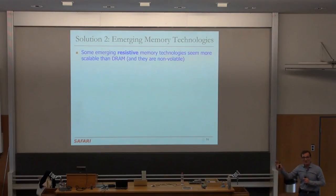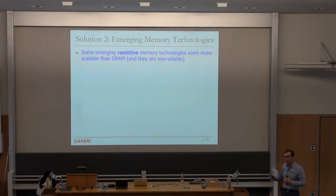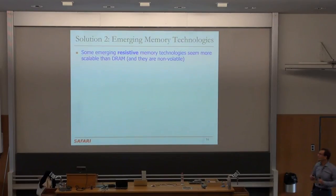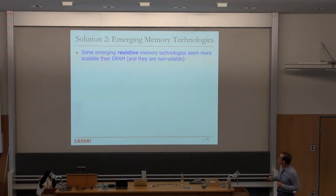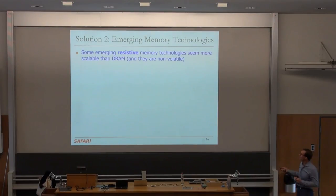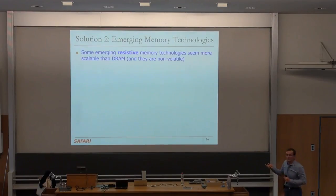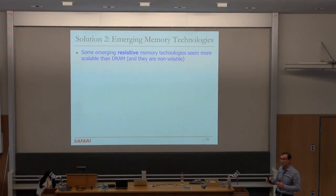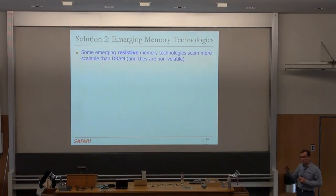The second solution direction, which is also in my opinion equally interesting — and we should pursue multiple solution directions in research as well as product design — is looking at some other technologies that may not have some of these problems. There are emerging technologies that are more scalable than DRAM in terms of how many bits you can put per area, and in terms of cost scaling, because they're fundamentally different.